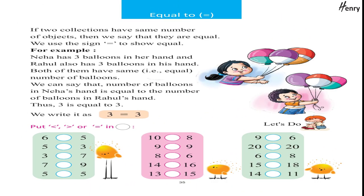Equal to. If two collections have the same number of objects, then we say that they are equal. We use the sign '=' to show equal. For example, Neha has three balloons in her hand and Rahul also has three balloons in his hand — both have the same, that is equal, number of balloons. We can say the number of balloons in Neha's hand is equal to Rahul's hand. Thus, three is equal to three; we write it as 3 = 3.